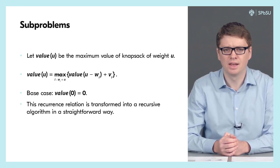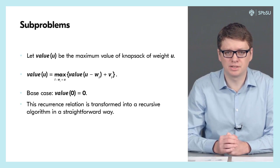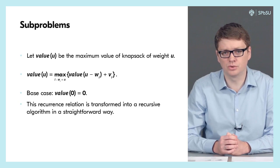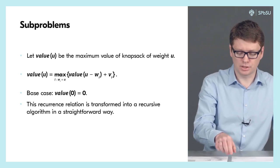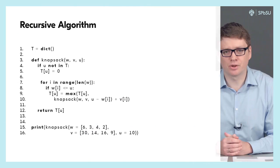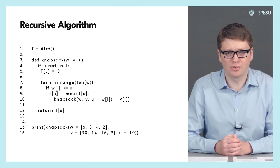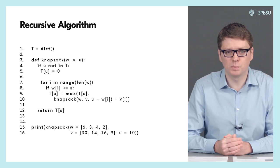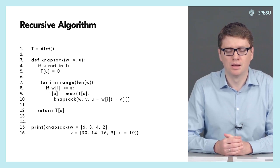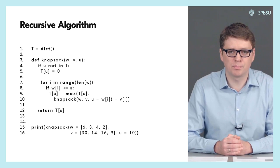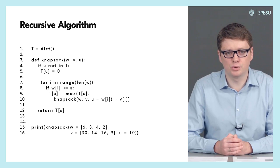When we have this recurrence relation, as usual it is just a technicality to transform it into a recursive algorithm. We use a table T to memoize all intermediate results — namely all the solutions for sub-problems for the bag of capacity U, where U ranges from zero to capital W.